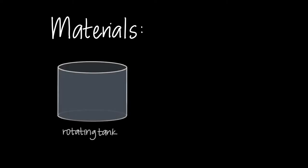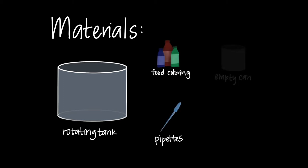So here's a list of materials that we'll need for the experiment: one rotating tank, this tank is the HT-2, we'll need some food coloring, some pipettes, an empty can, and some ice so that we can create a temperature gradient within the tank.